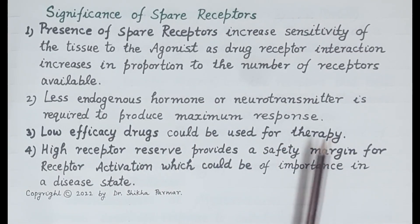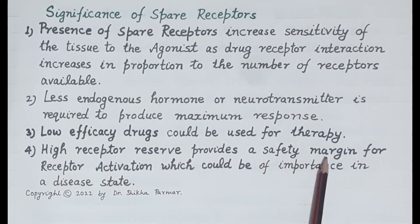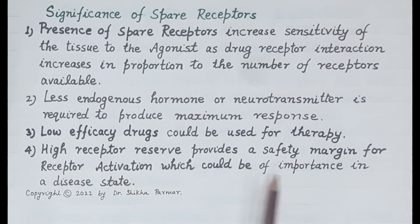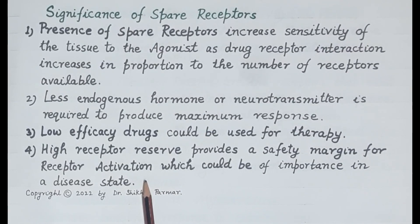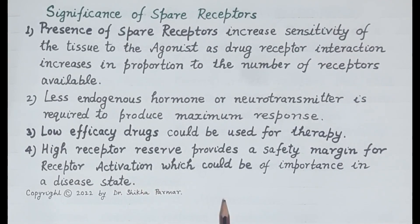Third, low-efficacy drugs could be used for therapy because of the presence of spare receptors. Fourth, a high receptor reserve provides a safety margin for receptor activation, which is important in disease states. If some receptors become inactive due to disease, the agonist or drug can still achieve maximum response using the spare receptors, though at a higher dose.